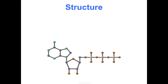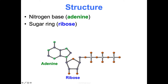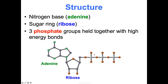Let's talk about its structure, because that's really important — remember, energy is stored in chemical bonds. ATP has three main parts: it has a nitrogen base called adenine, it has a sugar ring known as ribose, and then it has three phosphate groups — one, two, three — and these are held together by some high-energy bonds.